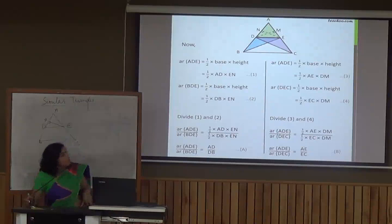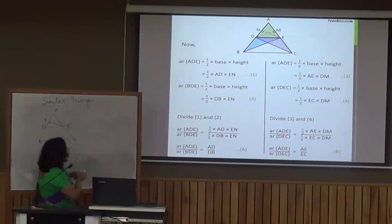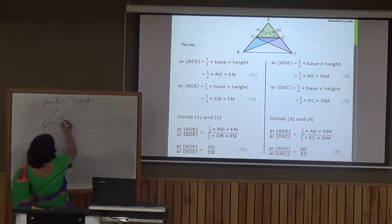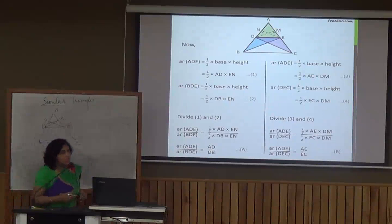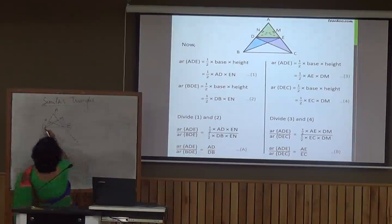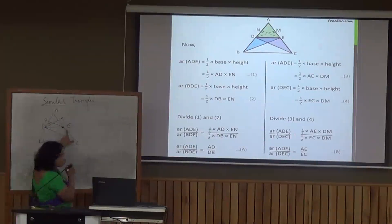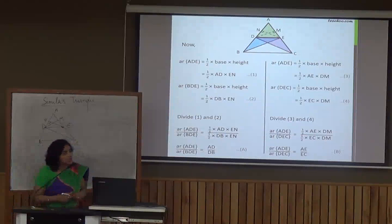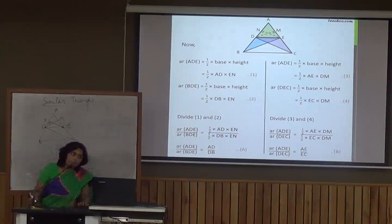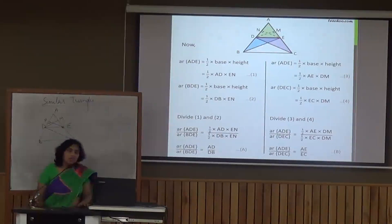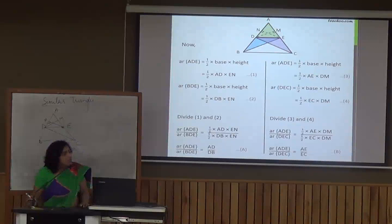Now we again take triangle ADE and calculate its area taking AE as the base and DM as the perpendicular. Area(ADE) = (1/2) × AE × DM. Then for triangle DEC — again an obtuse triangle — taking EC as the base with height DM: Area(DEC) = (1/2) × EC × DM. Dividing equations 3 and 4 and cancelling common factors, we get Area(ADE)/Area(DEC) = AE/EC.